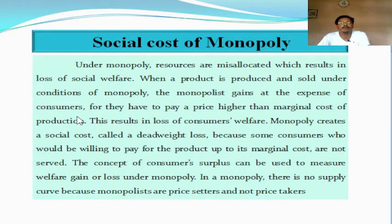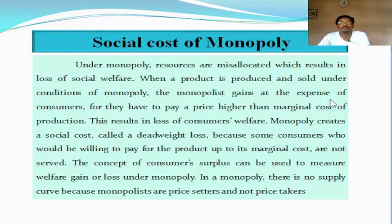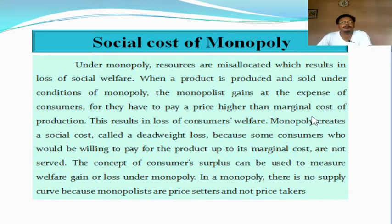Consumers are paying a higher price than the actual marginal cost of production of the commodity. In perfect competition market, the price is always equal to marginal cost. But under monopoly, price is always higher than the marginal cost — meaning the consumer is paying a higher amount. This results in loss of consumers' welfare: whatever be the difference between the price and marginal cost is the loss of consumer's welfare in monetary terms.